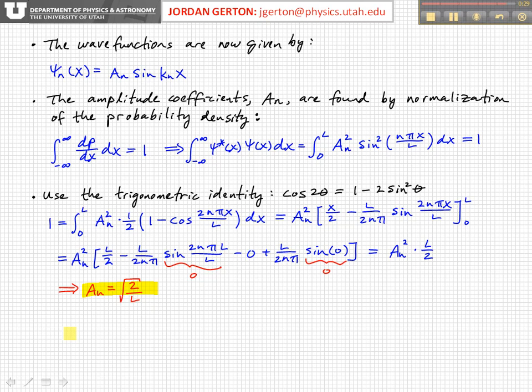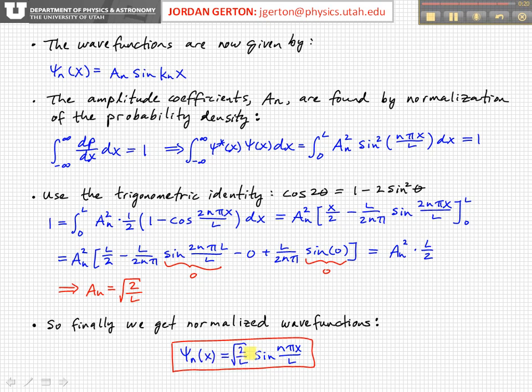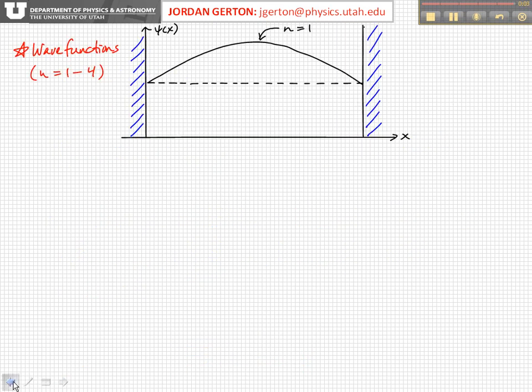And now if we write our wave functions, we now have normalized wave functions, and so our coefficient here is root 2 over L, and you notice that it's independent of N, so we have the same amplitude coefficient for each wave function, and now sine of n pi x over L. And so, in the end, these are finally the normalized wave functions.